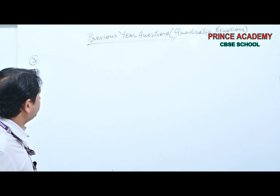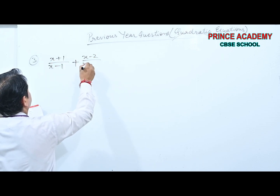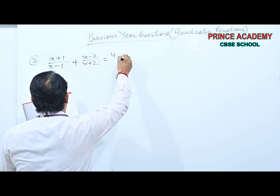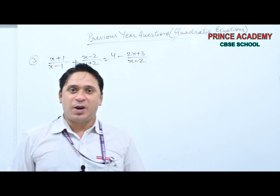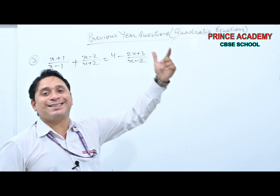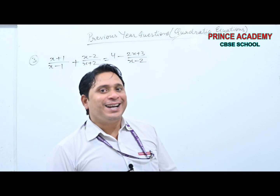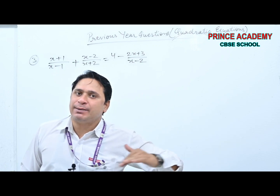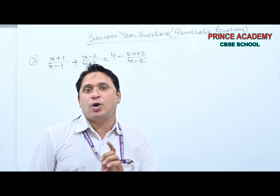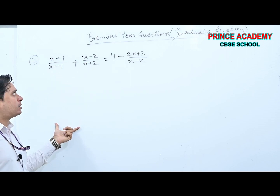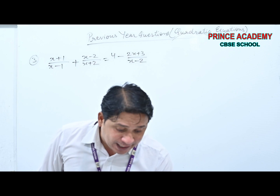Question 3: (x+1)/(x−1) − (x−2)/(x+2) = 4 − (2x+3)/(x−2). My advice: instead of taking LCM of both sides at once (which risks silly mistakes under exam pressure), solve the left side separately and the right side separately, then cross-multiply.